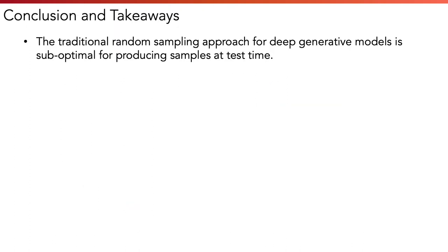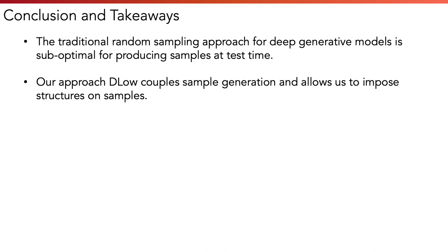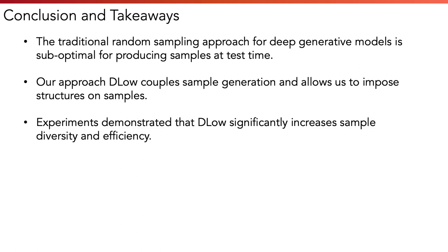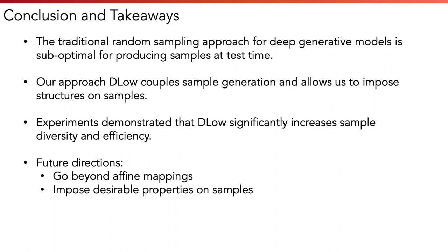To conclude, the traditional random sampling approach for deep generative models is suboptimal for producing samples at test time. Our approach DLow couples sample generation and allows us to impose structures like diversity on the generated samples. Experiments demonstrated that DLow significantly increases sample diversity and efficiency. Some interesting future directions are going beyond affine mappings for latent transformation conditions and also imposing other desirable properties on the samples.